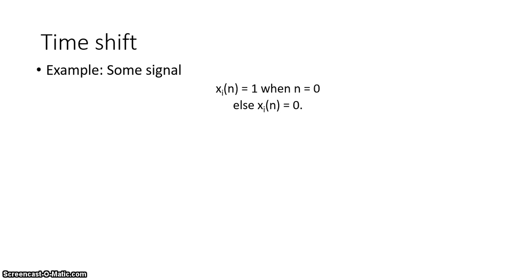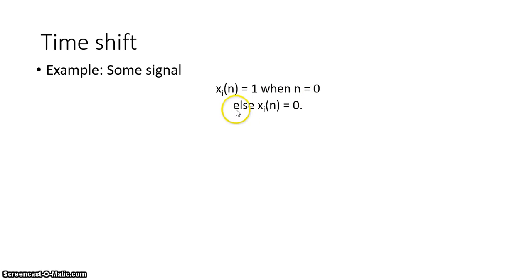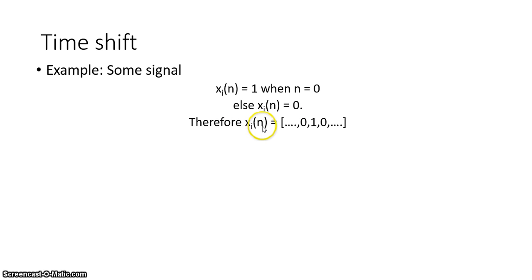Now let's take a look at time shift. The best way to look at this is with an example. Let's say we have a signal xi(n), which is equal to 1 when n equals 0 and equal to 0 everywhere else. Another way to look at this is as a vector: xi(n) equals 0, 0, 0, 0, 0, 1, 0, 0, 0, and so on, where 1 is at position n equals 0.